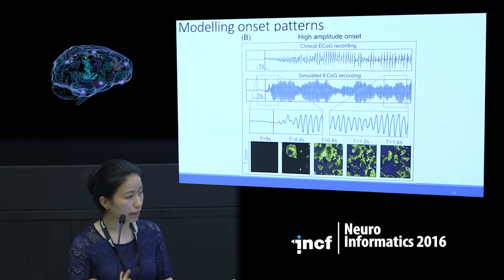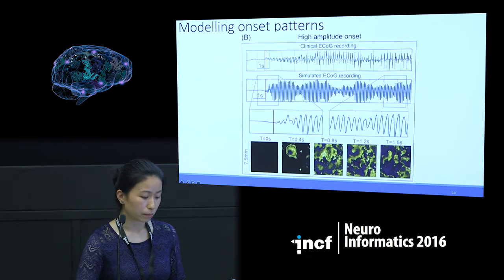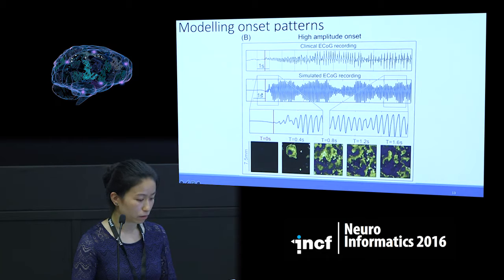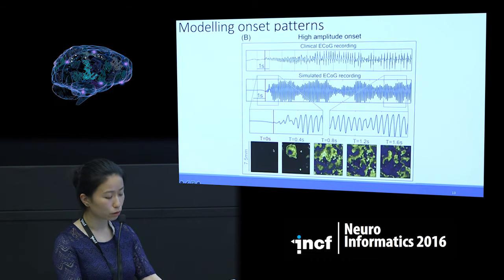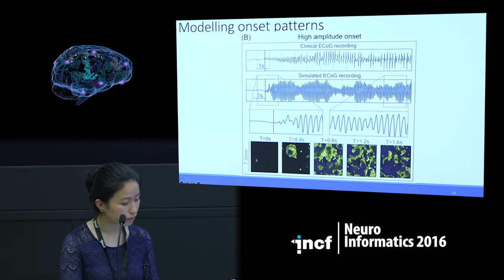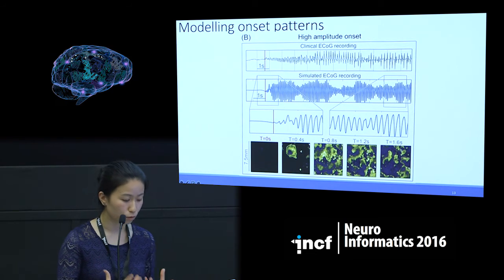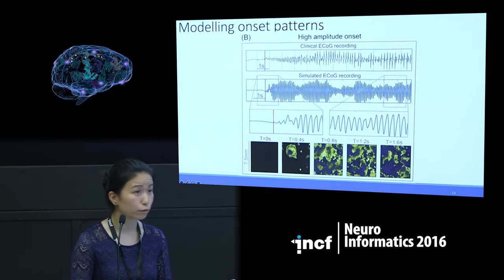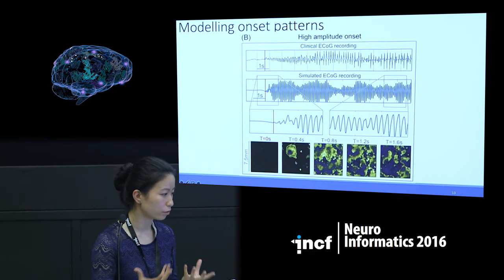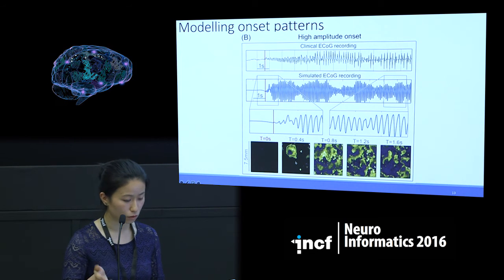Can we find the other high amplitude onset pattern as well? Yes, we can. Looking at the spatial-temporal evolution of this seizure, it's actually very different. The full recruitment of the sheet happens a lot faster — within the first 400 milliseconds, the seizure has already spread to about a quarter of this cortical sheet, which is why we see this high amplitude onset.